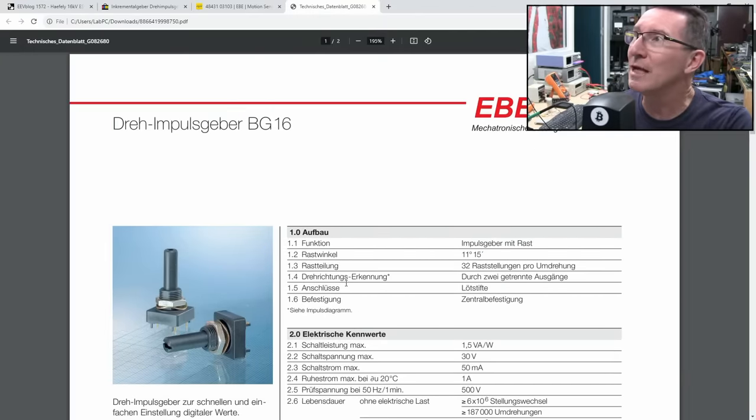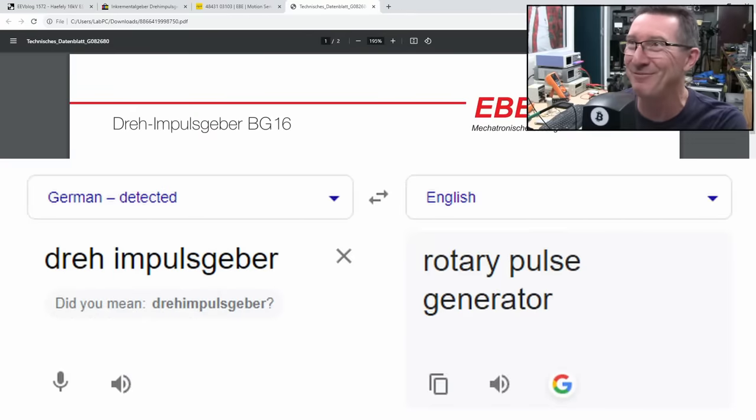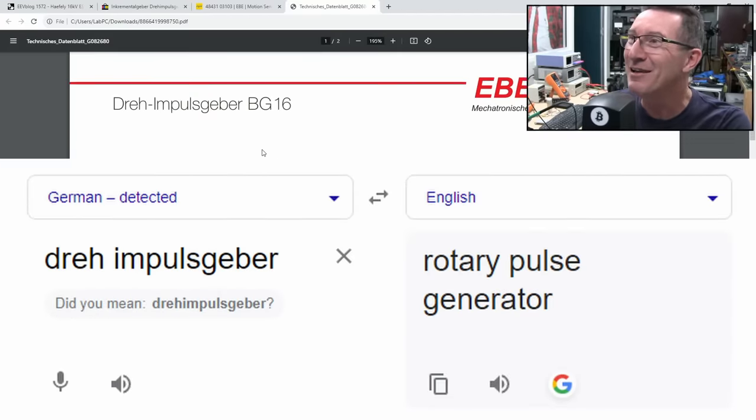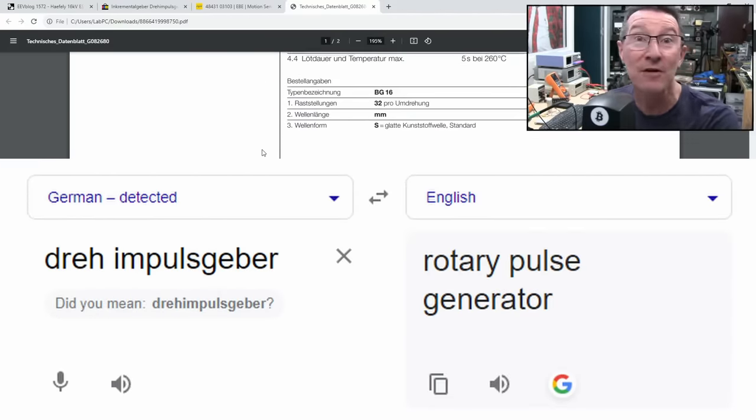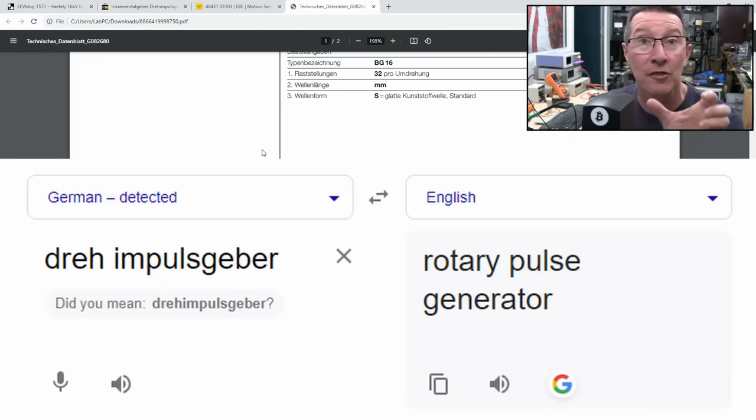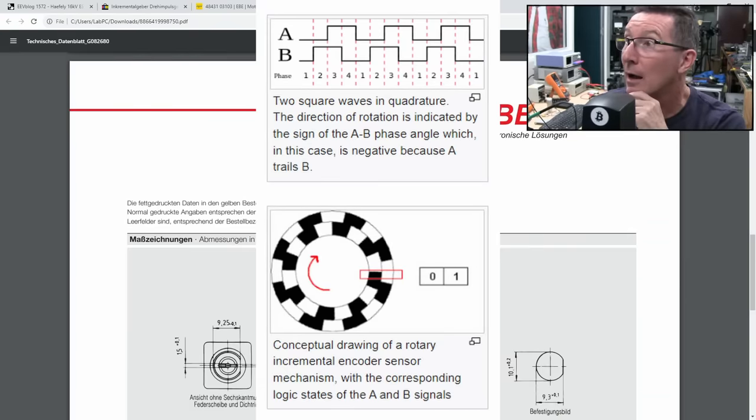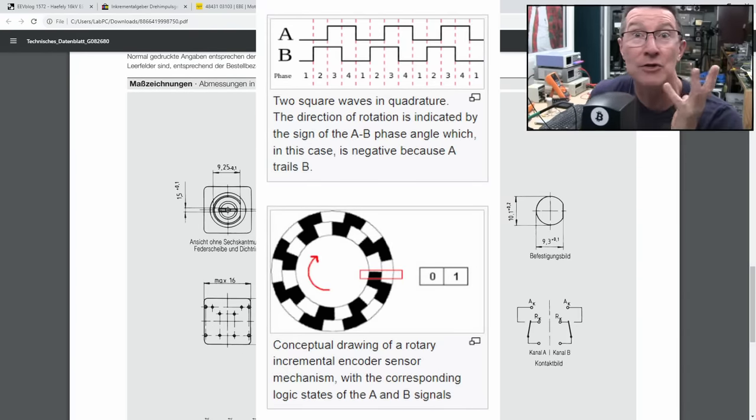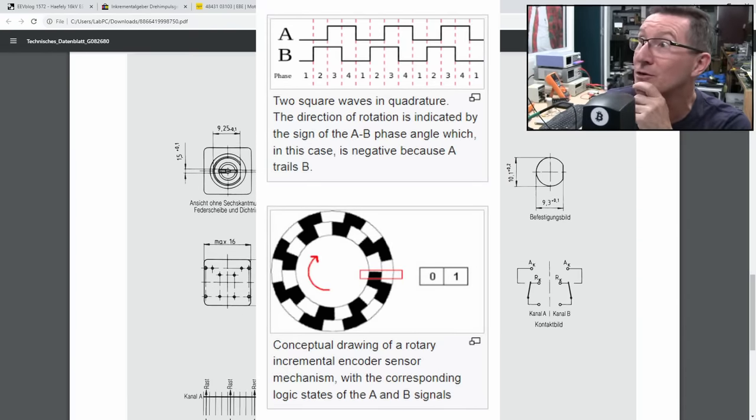Let's check it out. Made by a company called EBE, a German company, and it's basically a Dreimpulsbrugger. I'm goofing that one. But yeah, it is different to your usual three-pin phase quadrature encoder that you're used to. These are a dime a dozen.